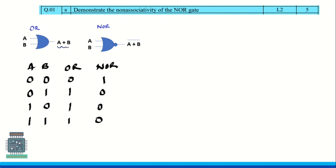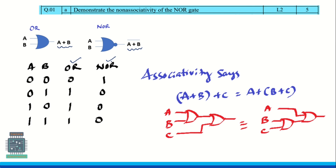As we know, OR gate gives A plus B, and NOR gate gives the output A plus B whole bar. So this is the output of OR gate and this is the output of NOR gate. For associativity of OR gate, it says (A+B)+C is equal to A+(B+C), and these two expressions are equal. We can take any variable outside and group the other two.